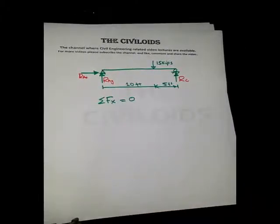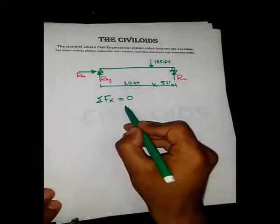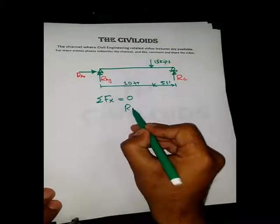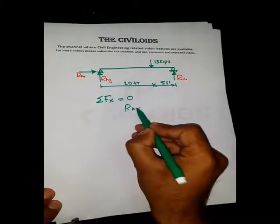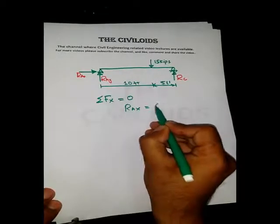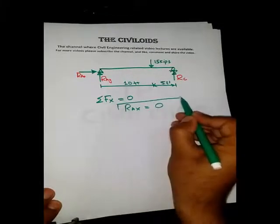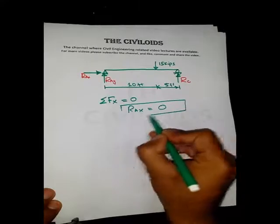Starting from the first equation of equilibrium, ΣFx=0. We can see that in this beam there is no inclined or horizontal force, so RaX is equal to zero. We have determined the first unknown: RaX = 0.